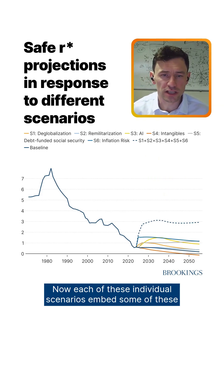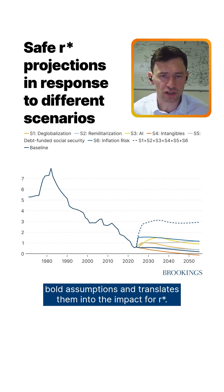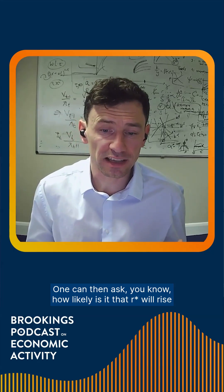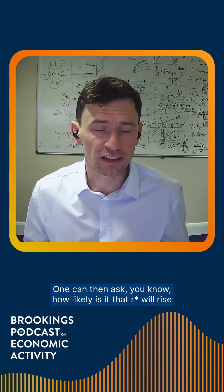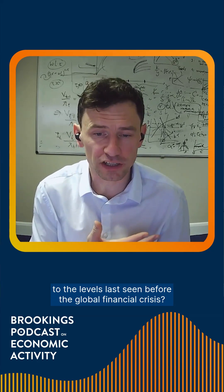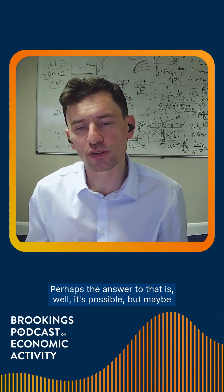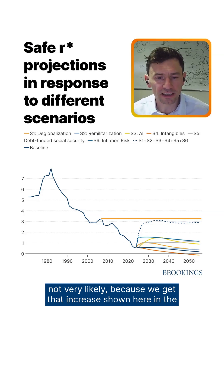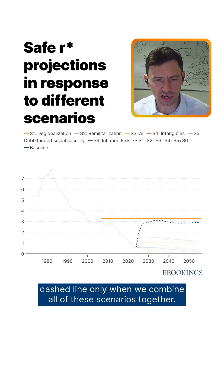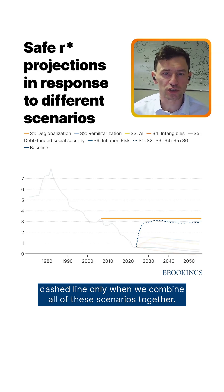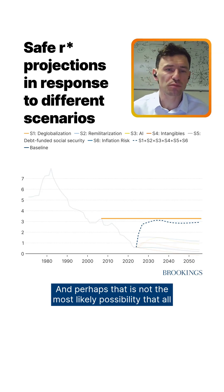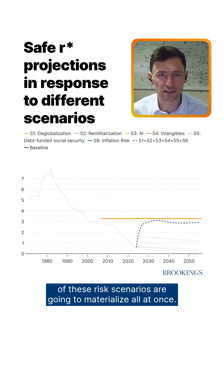Each of these individual scenarios embeds some bold assumptions and translates them into the impact for R-star. One can then ask how likely it is that R-star will rise to the levels last seen before the global financial crisis. Perhaps the answer is that it's possible, but not very likely — because we get that increase shown here in the dashed line only when we combine all of these scenarios together, and it is probably not the most likely outcome that all of these risk scenarios materialize at once.